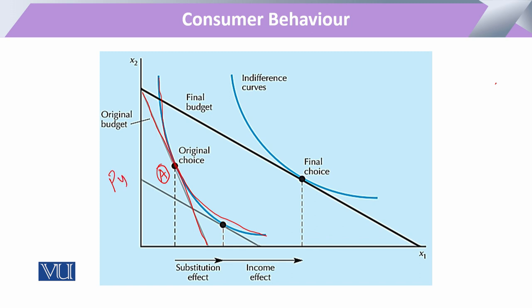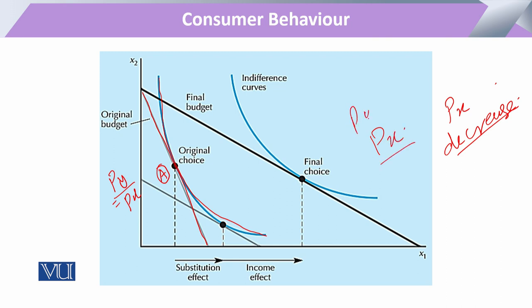At the optimal bundle A, the slope of the budget line is expressed as price of Y divided by price of X. Now if the price of X decreases, the slope — price of Y divided by price of X — becomes steeper and the budget line pivots outward. We then draw a parallel line tangent to this indifference curve, rotating the new budget line around the original indifference curve.